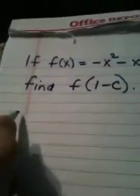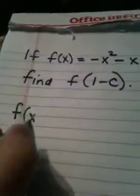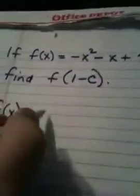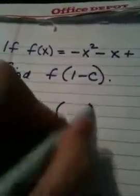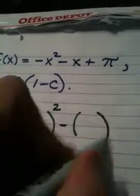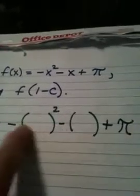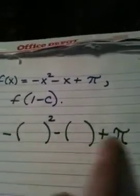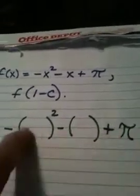f of x is the opposite of the input squared—that stands for input—the opposite of the input squared minus the input plus pi. So this is what the function, this is the y value of the function. This is how you determine output.